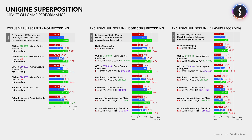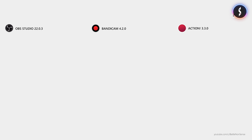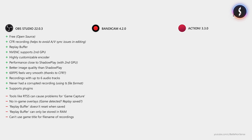Now let's have a look at my updated list of pros and cons for OBS, Bandicam and Action. OBS is free and open source. It uses a constant frame rate to record videos, which helps to avoid audio video sync issues, especially during editing. It offers a replay buffer. You can use a second GPU to do the NVENC encoding. The encoder settings are highly customizable. Performance is close to Shadowplay when you use a second graphics card. You get better image quality than with Shadowplay. 60fps recordings feel very smooth thanks to CFR. You can have up to 6 audio tracks in your recordings, and I have never had a single corrupted recording. It also supports plugins.